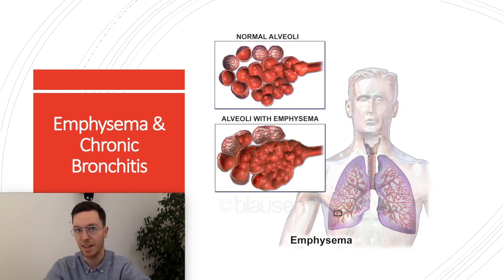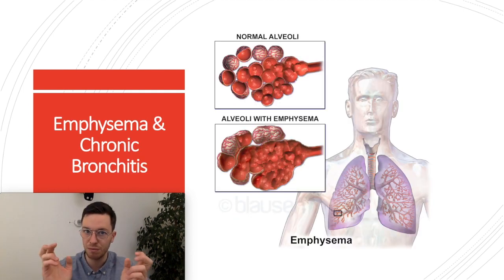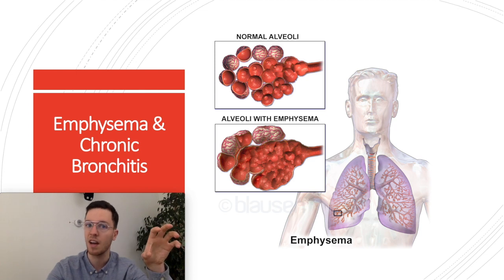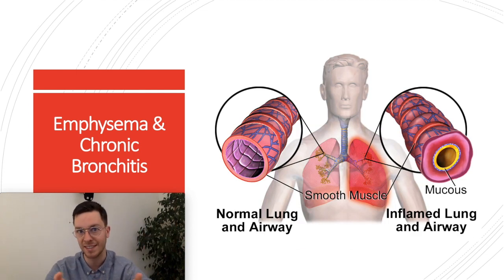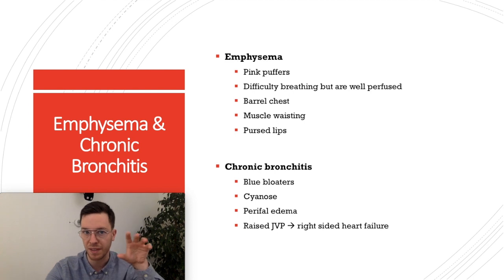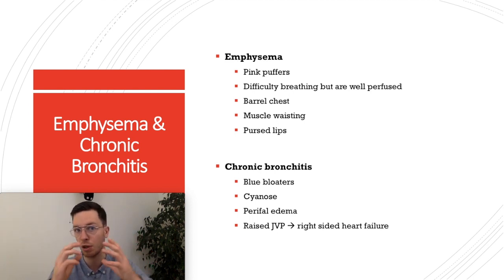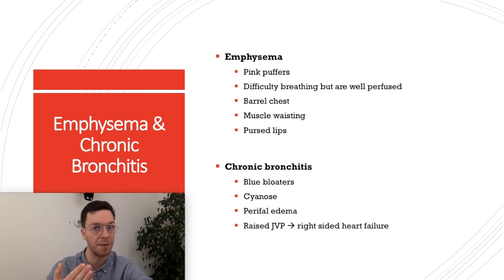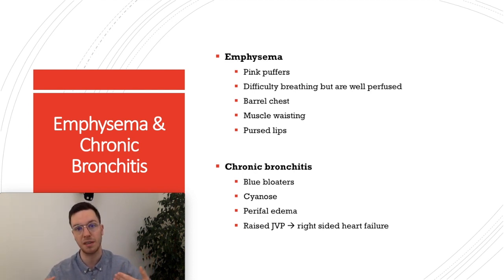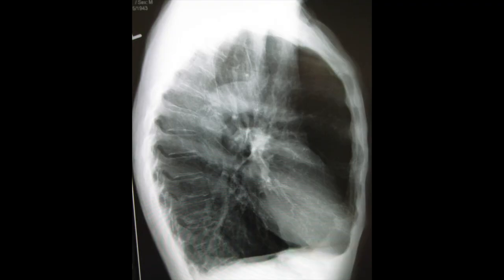COPD can be seen as a spectrum. It's caused by two main components: emphysema and chronic bronchitis. Every patient with COPD has a different amount of each. Patients with mostly emphysema are called pink puffers, because they have difficulties breathing but are well perfused and therefore look pink. They have a barrel chest and muscle wasting.